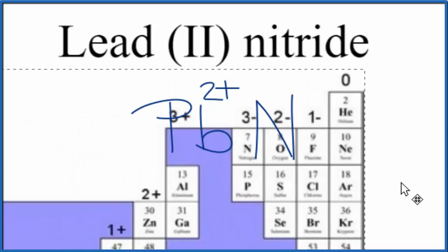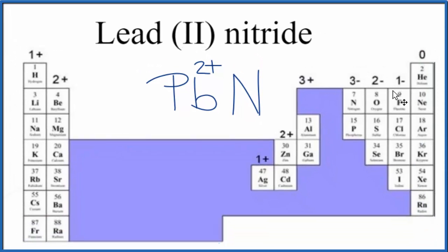For the nitrogen, let's look that up on the periodic table. So we find nitrogen over here, here's nitrogen, it's going to have a 3 minus ionic charge, just like phosphorus. Put a 3 minus here, and we have the charges for the elements in lead two nitride.